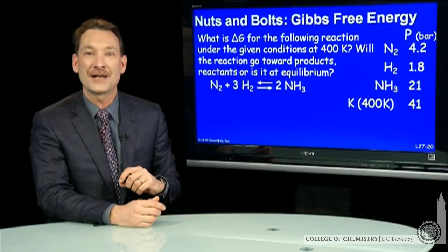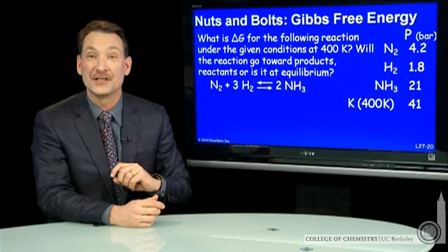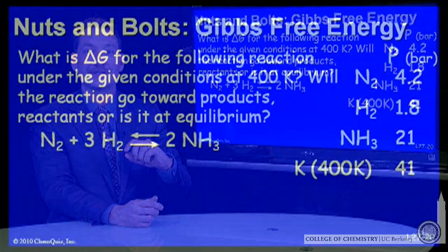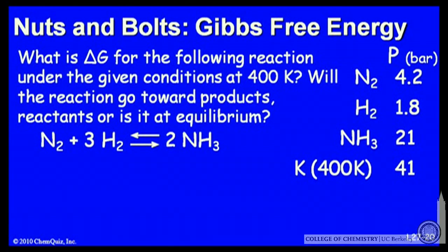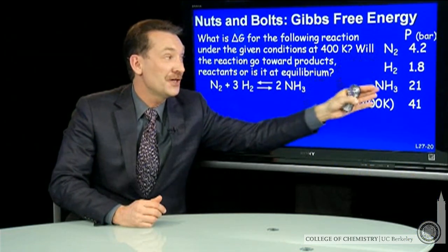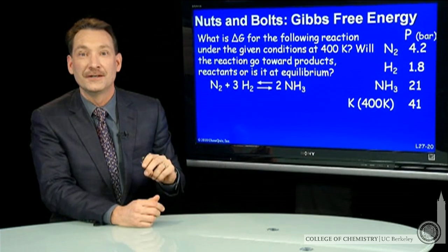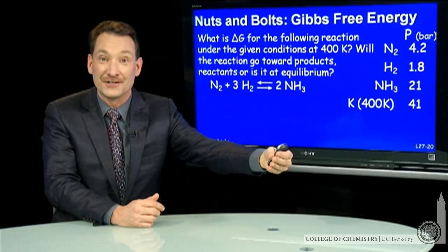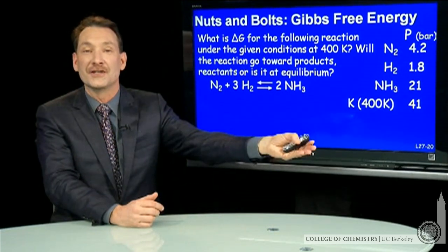Let's look at a gas phase chemical reaction and determine the free energy difference between the products and the reactants. We're going to determine delta G without the standard sign. Delta G with the standard sign would mean all the pressures would be one atmosphere. Here we're not at that standard state conditions. We're at a different set of conditions.